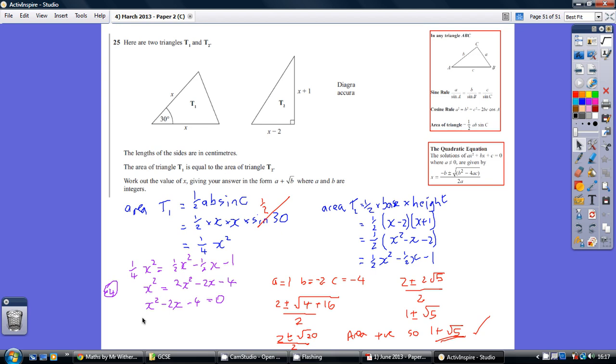Now this does not factorize, so we are going to have to use the quadratic equation, again from the tables. A is 1, B is minus 2, C is minus 4. Substituting into this formula here, we get this, which simplifies to this.